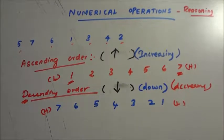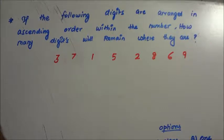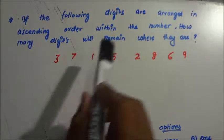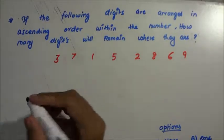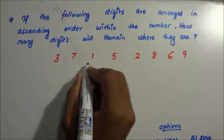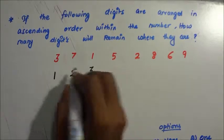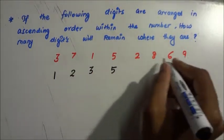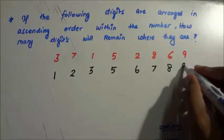Now we can see the problem. If the following digits are arranged in ascending order within the number, how many digits will remain where they are? We have to arrange this number in ascending order — increasing order where the first value should be the lowest. Here the lowest value is 1, then 2, then 3, then 5 (there is no 4), then 6, then 7, then 8, and the last value is 9.